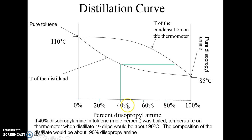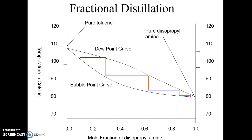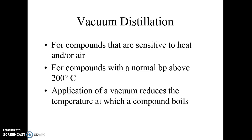I'm not going to expect you to understand this — it's experimentally determined. We're able to correlate a percentage with the temperature of the distilland and the temperature of the condensate on the thermometer, which tells us the exact percentage composition of your distillate. You can skip over this section on drawing the fractional distillation concept on the distillation mat.